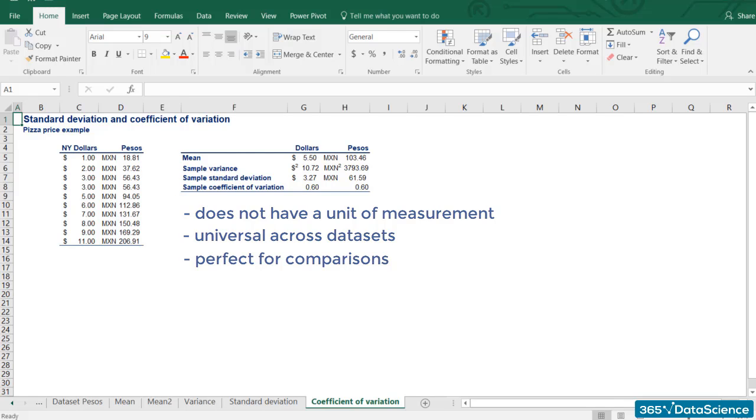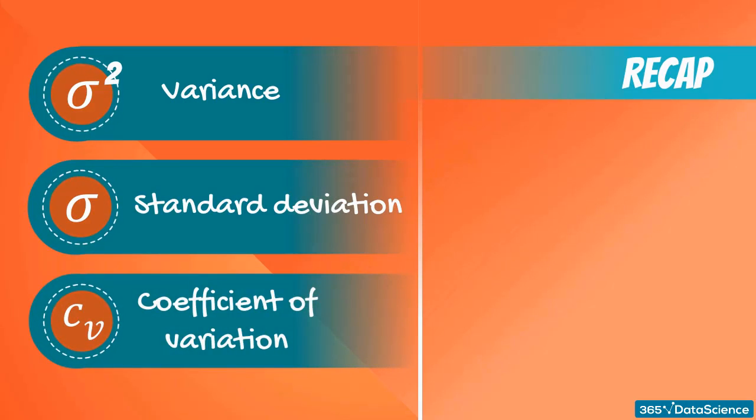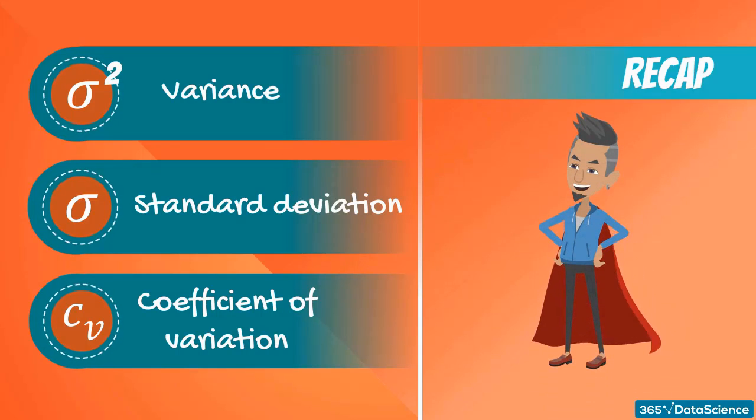Let's recap what we have learned so far. There are three main measures of variability: variance, standard deviation, and coefficient of variation. Each of them has different strengths and applications. You should feel confident using all of them as we are getting closer to more complex statistical topics. Thanks for watching.